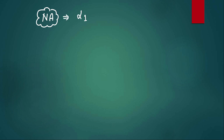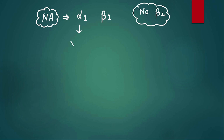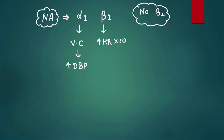Before the answer, let me talk briefly about noradrenaline, also called norepinephrine. It acts on almost all receptors — alpha-1, beta-1 — but mainly it doesn't have action on beta-2. So it can act on alpha-1, alpha-2, beta-1, beta-3 but minimal action on beta-2. Alpha-1 is located in blood vessels, so it causes vasoconstriction and increases diastolic blood pressure. Beta-1 is located in the heart, so it increases heart rate and cardiac output, raising systolic blood pressure.